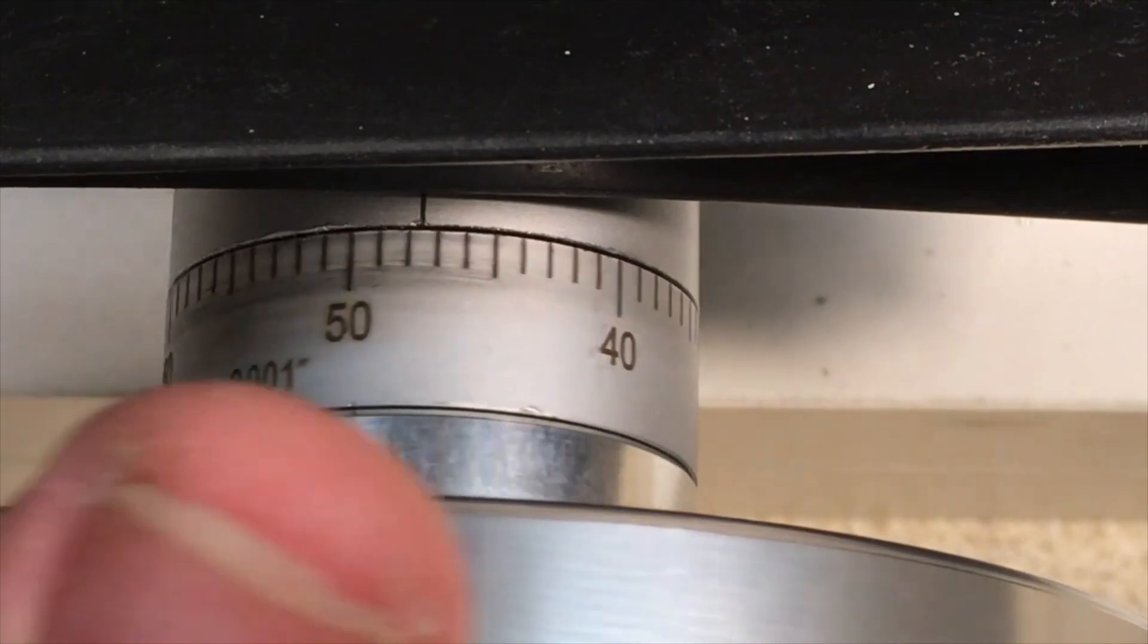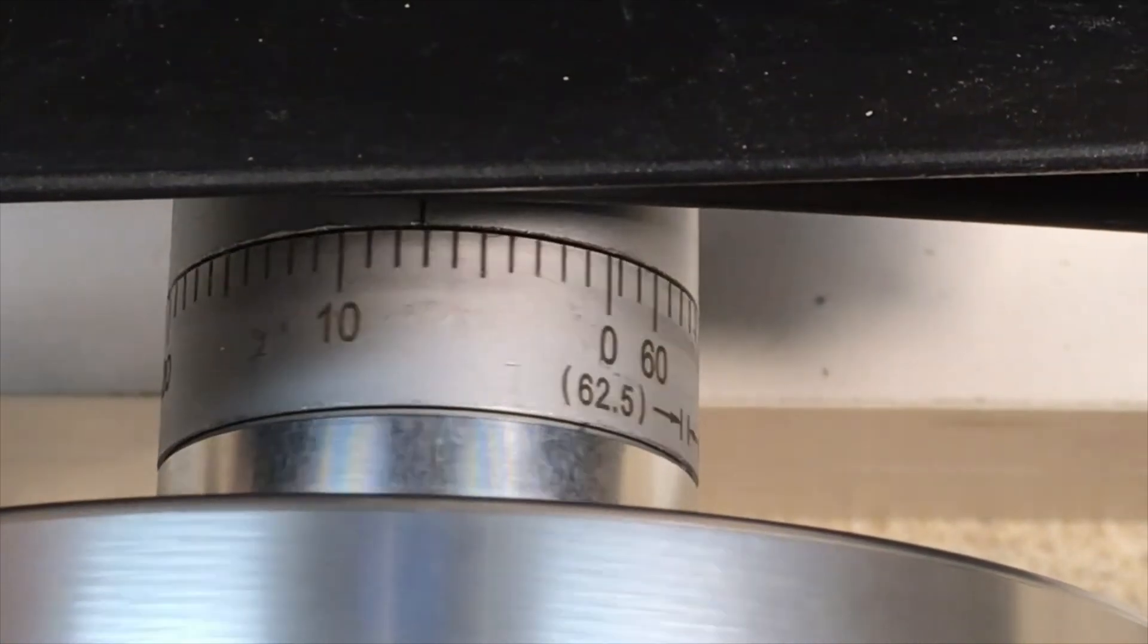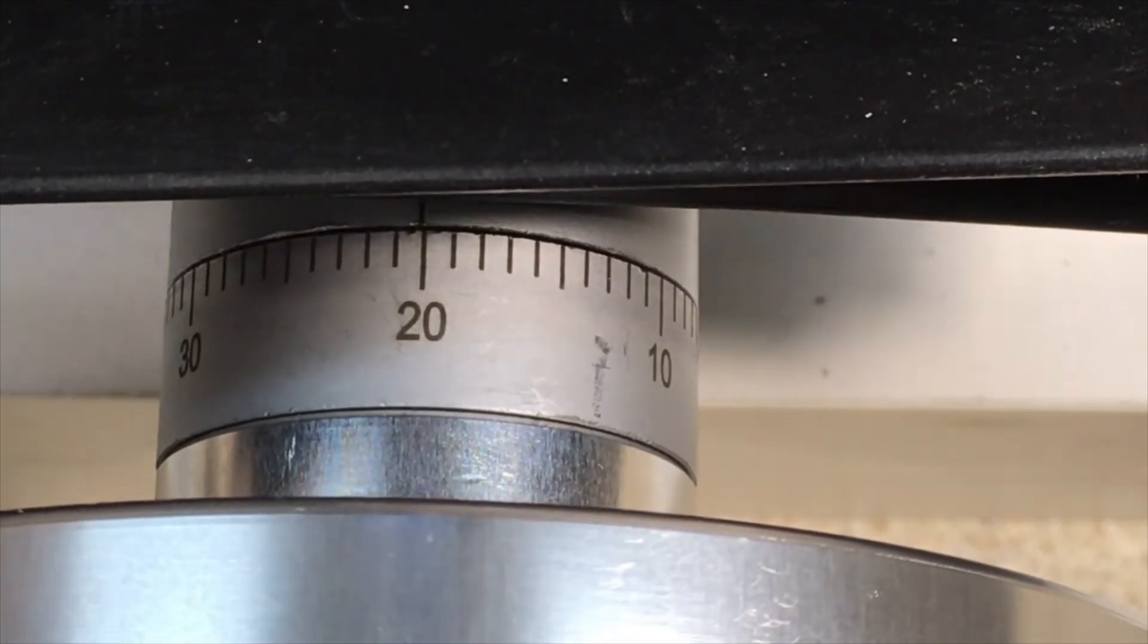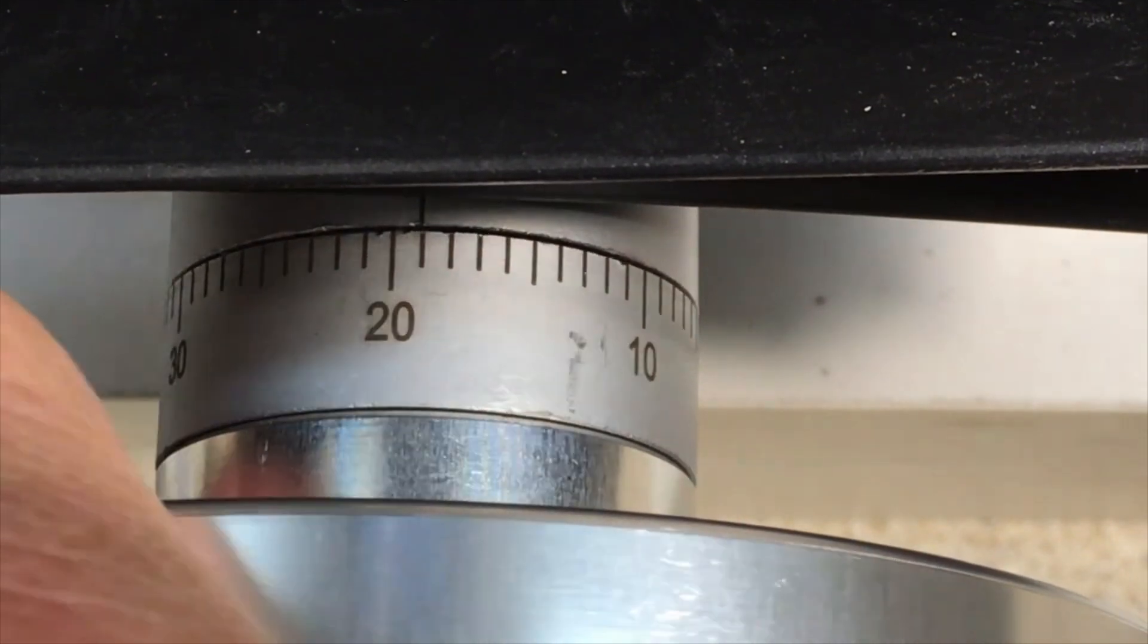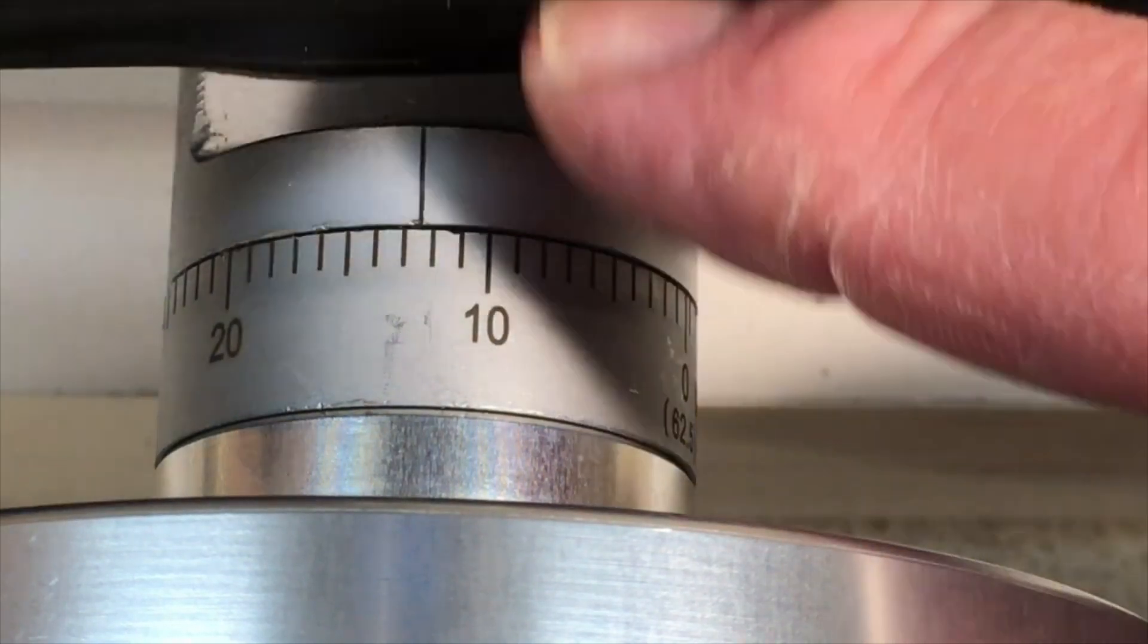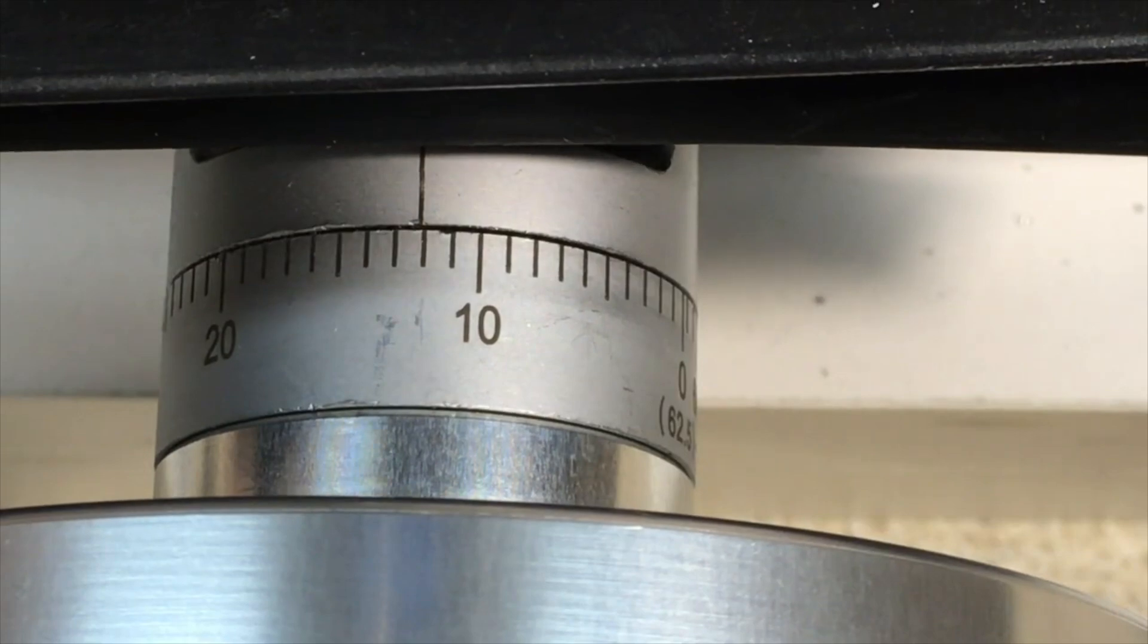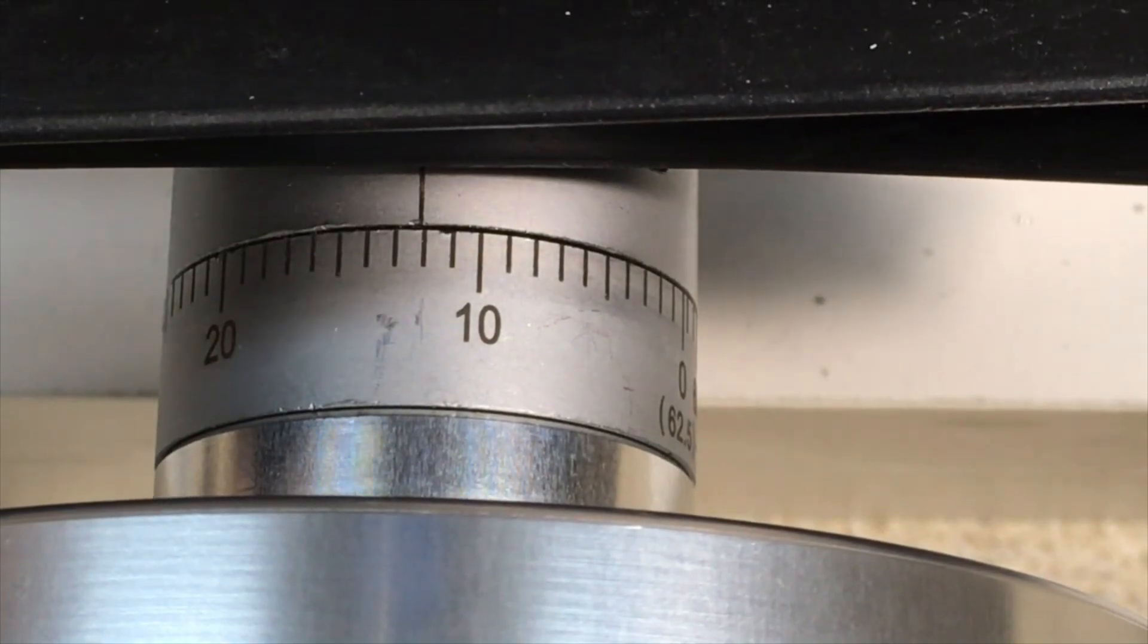And while we're on the subject let's go ahead and check the y-axis backlash. So I'm going to turn the hand wheel clockwise and I'll stop at the 20 mark, and now I'll zero the DRO. And now I'm going to turn counterclockwise until the DRO moves. And there it is. The backlash in this case looks like it's about eight thousandths. So we have about six thousandths of backlash in the x-axis and about eight in the y-axis.